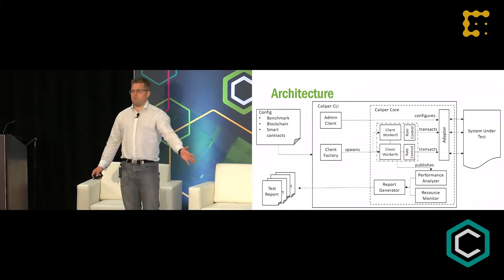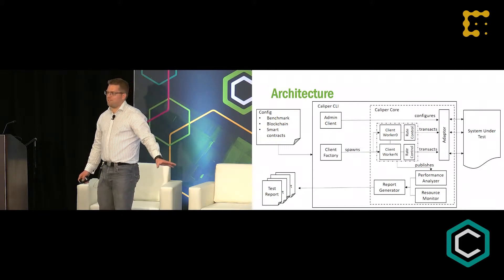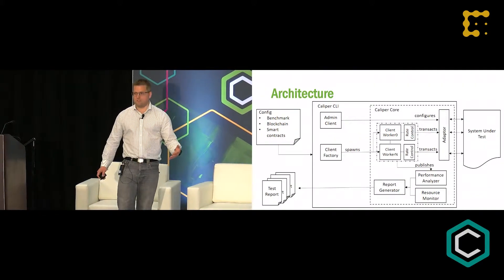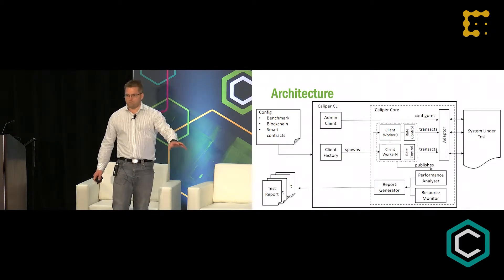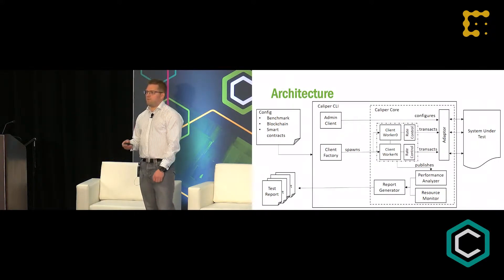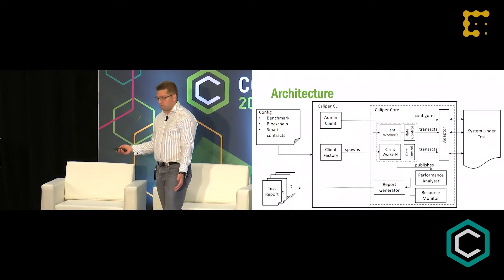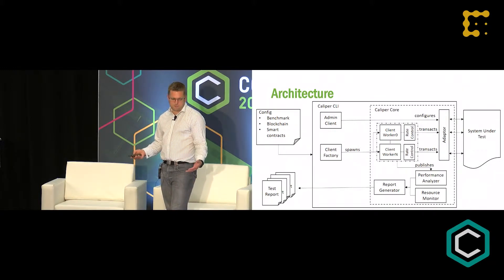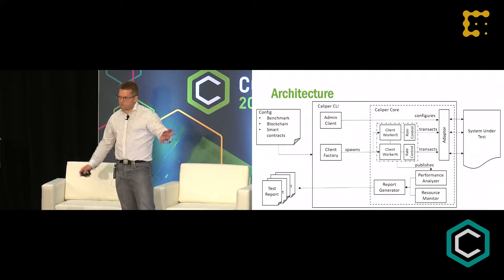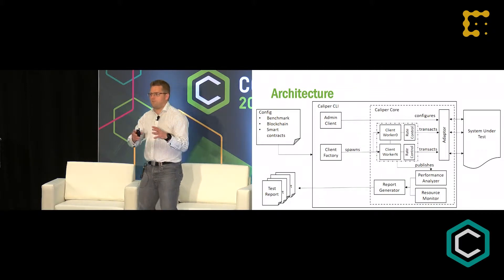I apologize for this diagram — no amount of comics can make this interesting. But I do want to talk through it, because this is, in its essence, how Caliper works. We start in the top left with a bunch of configuration files: the benchmark configuration, the blockchain itself, what we're testing against, and smart contracts. Those are the only bits of information you need — this is your contribution, containing everything you are testing.